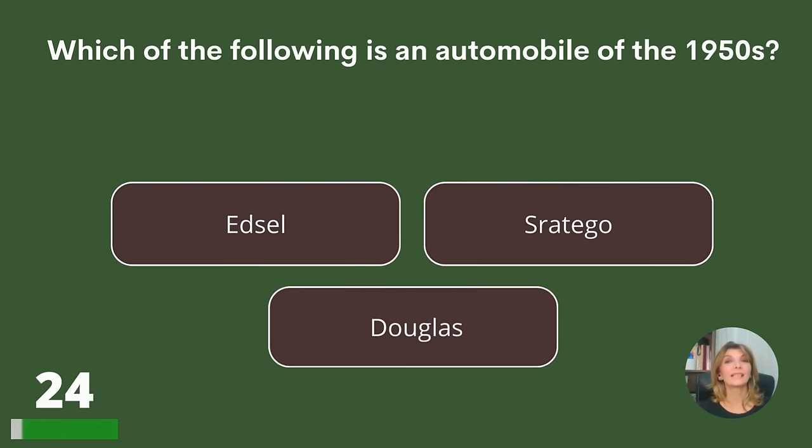Which of the following is an automobile of the 1950s? The Edsel, the Stratego, or the Douglas?